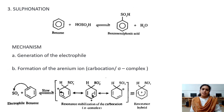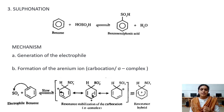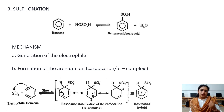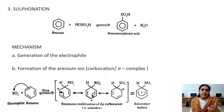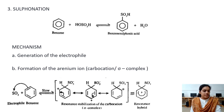The third example is sulfonation. Benzene is heated with fuming sulfuric acid. Fuming sulfuric acid is highly concentrated sulfuric acid known as oleum, where SO3 gas is dissolved at high concentration. For electrophile generation, two molecules of H2SO4 react to give SO3 + HSO4- + H3O+.